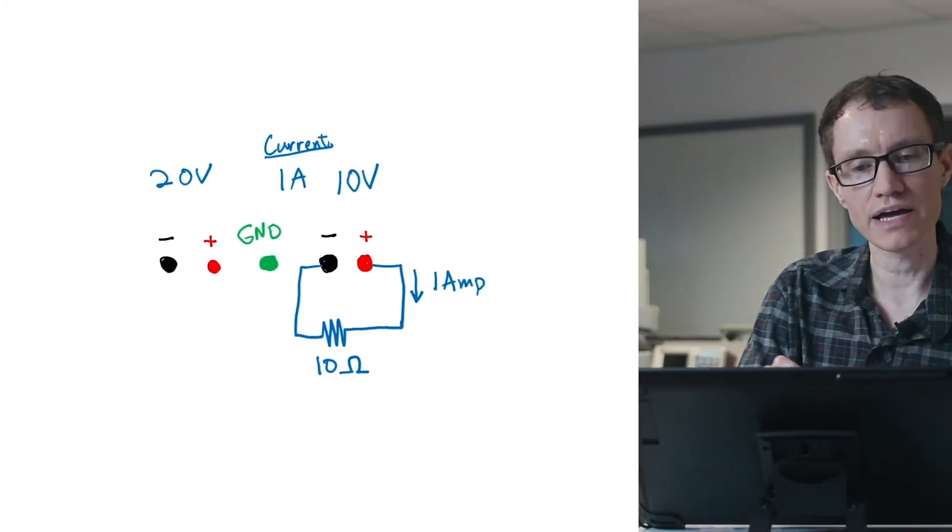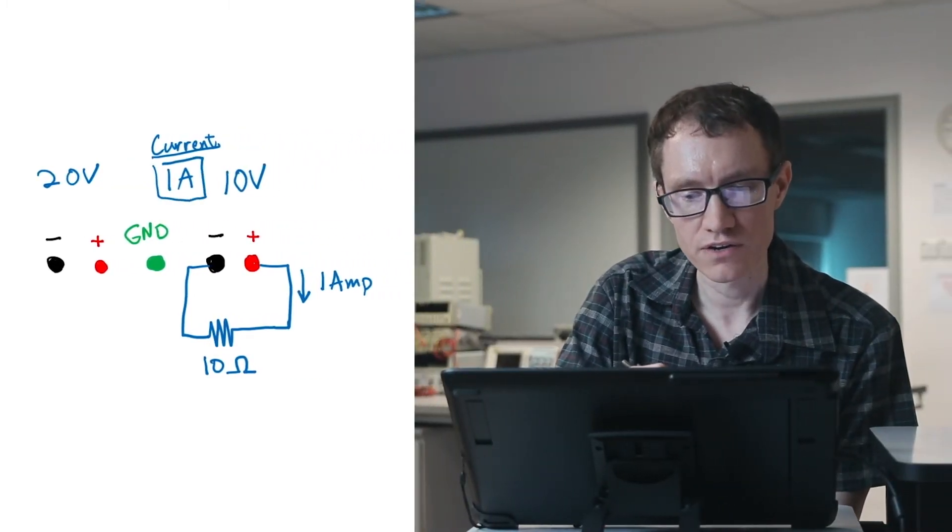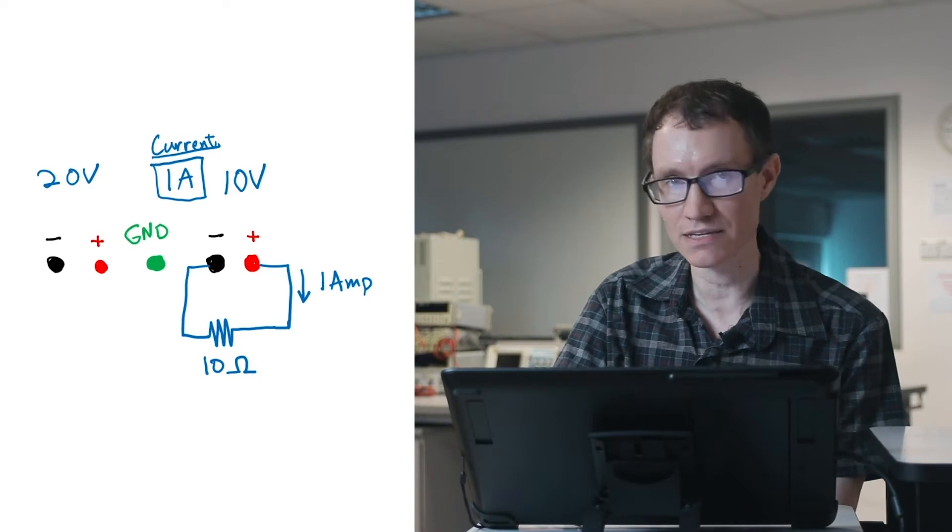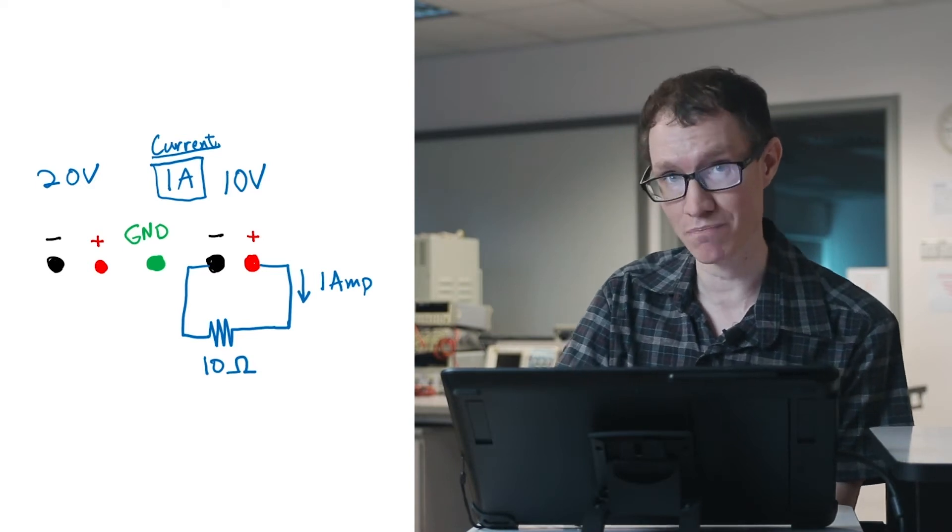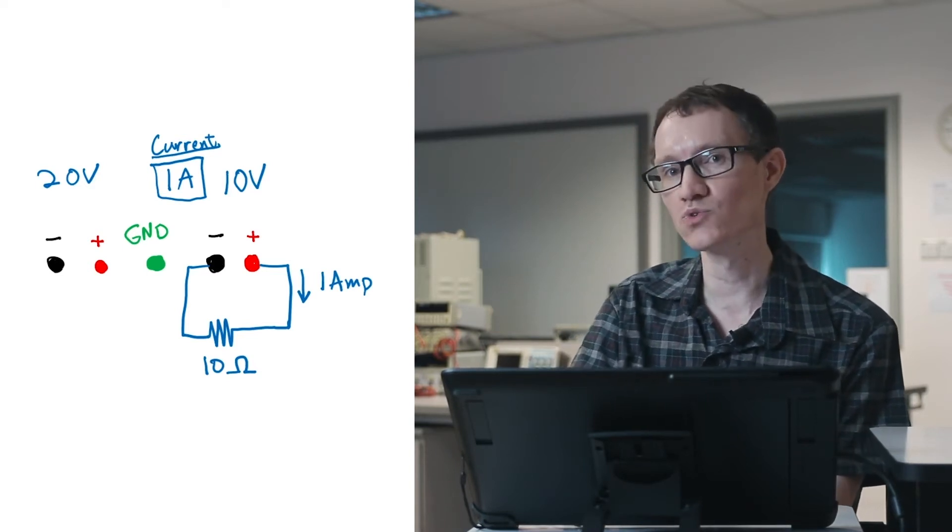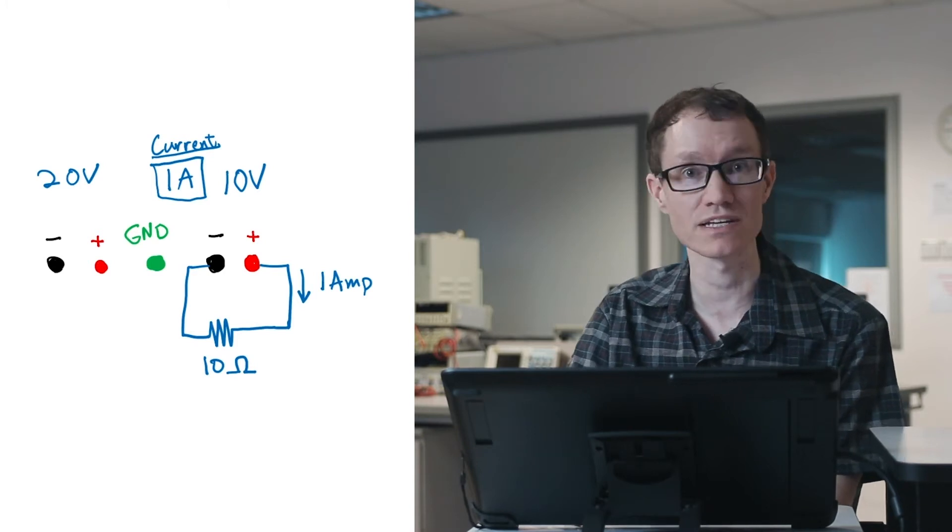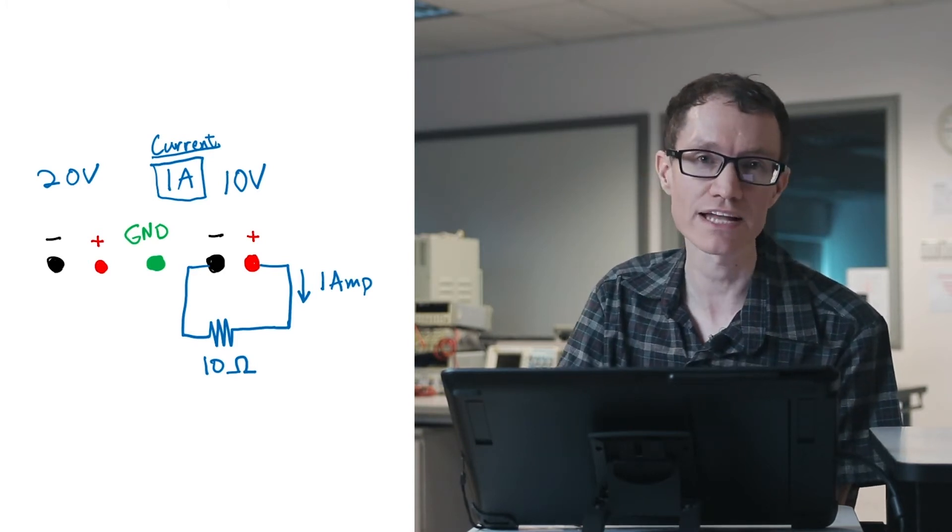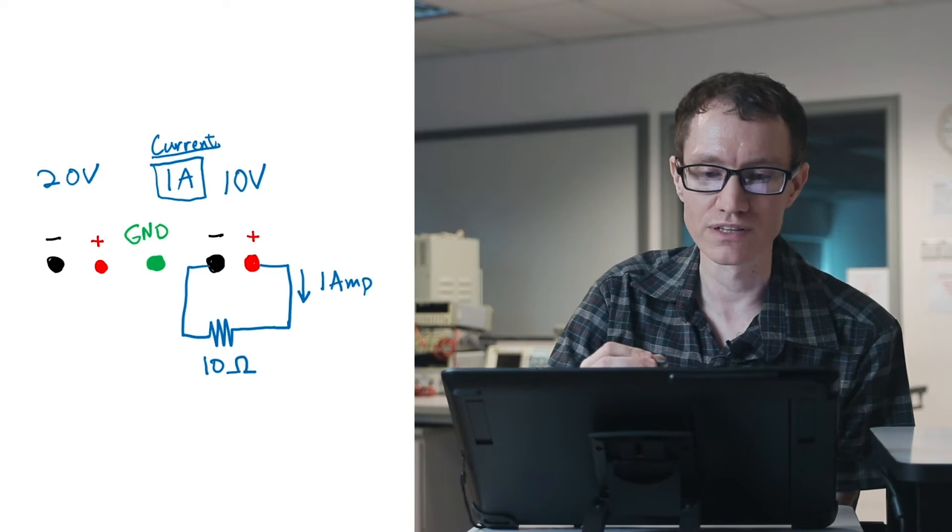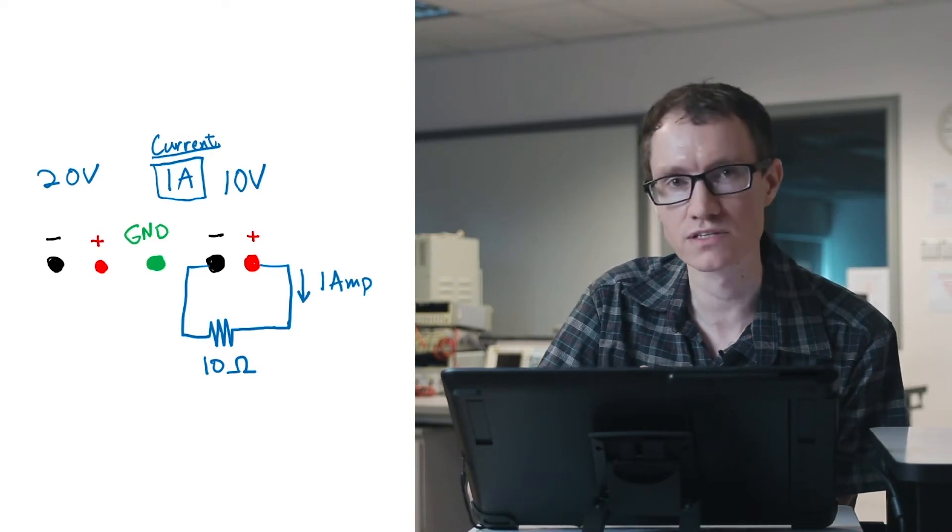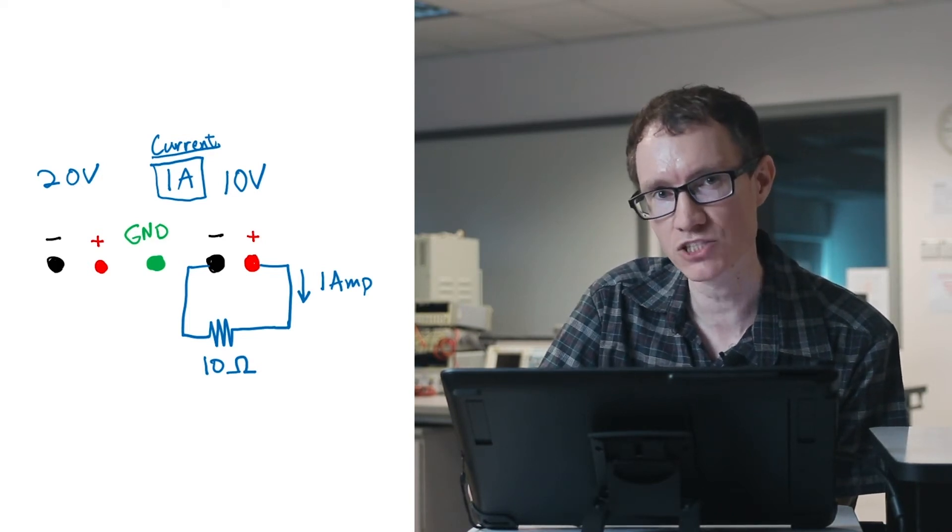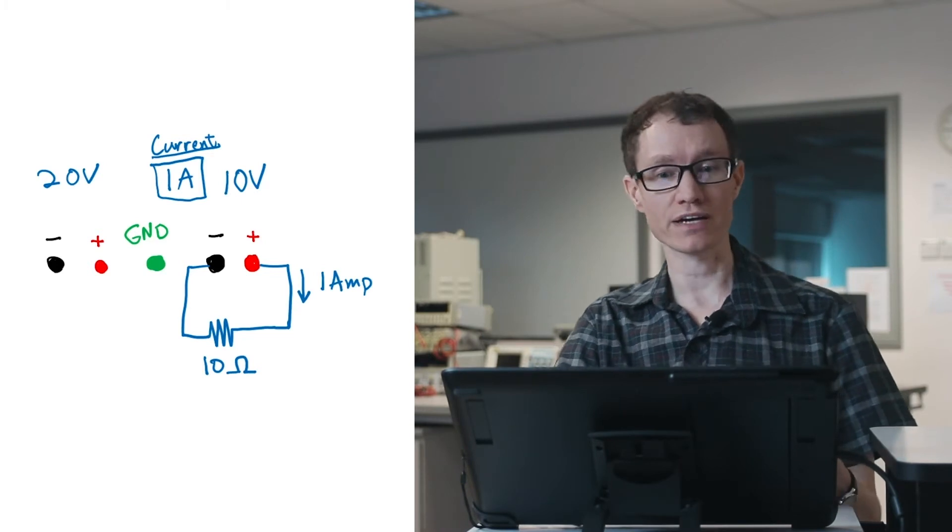But when the power supply is turned off, this number does not typically show 0 amperes. Because the display has a dual meaning with these power supplies and a lot of power supplies. And it's related to the limit. In other words, this power supply has a feature that can help you protect devices.